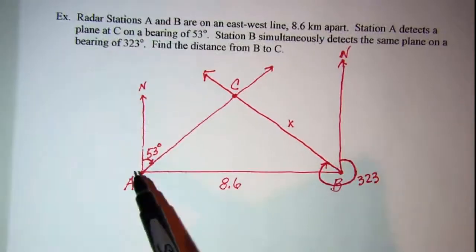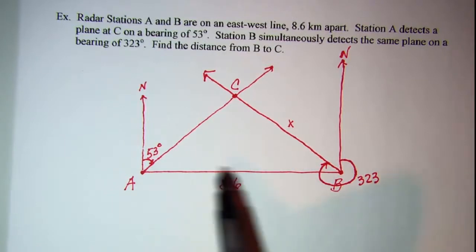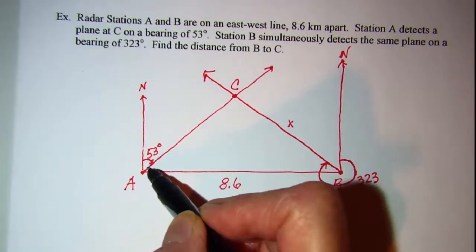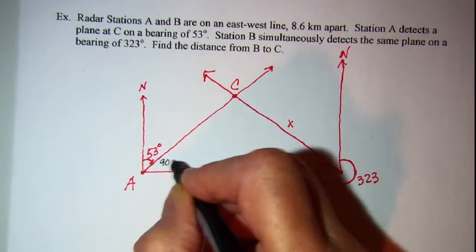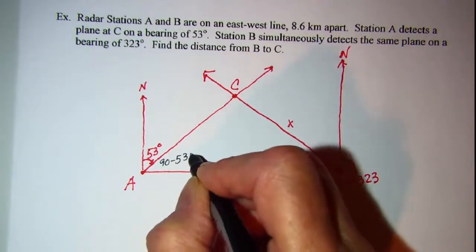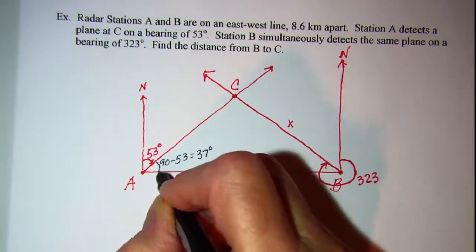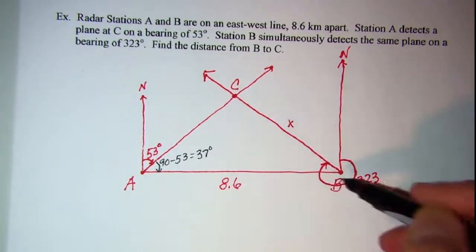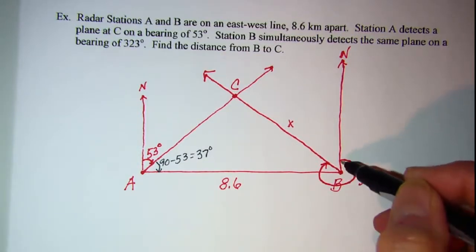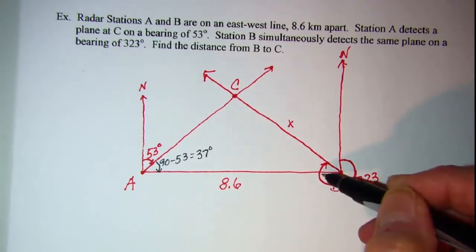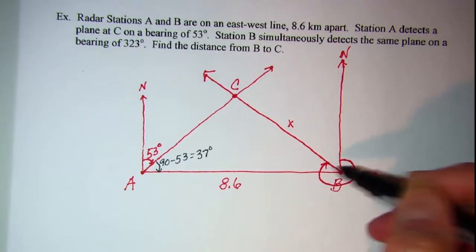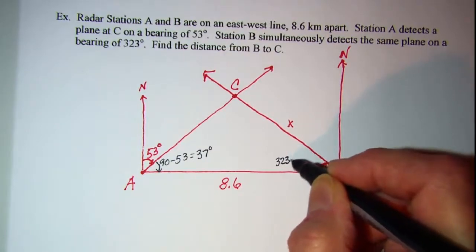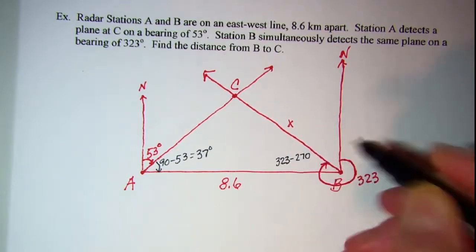We do know that our east-west line is perpendicular to the due north line. So if this angle is 53 degrees, this angle is going to be 90 minus 53, which is 37 degrees, right here. And then for this one to get our angle inside this triangle, we can take 323 and subtract 270, because three quarters of the way around the complete circle is 270 degrees. So 323 subtract 270 is 53 degrees.